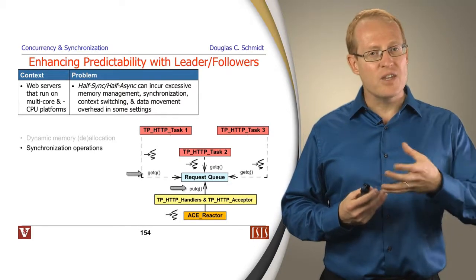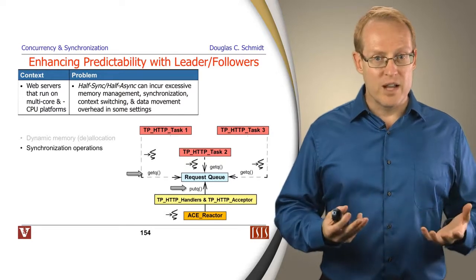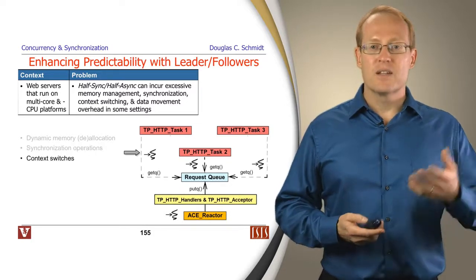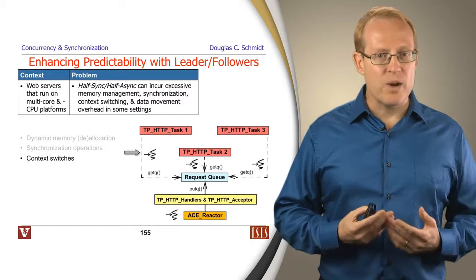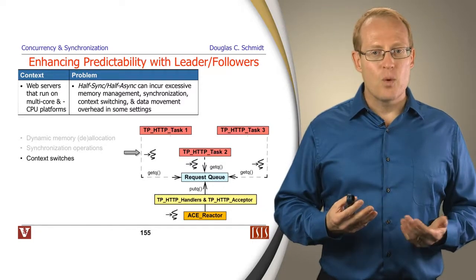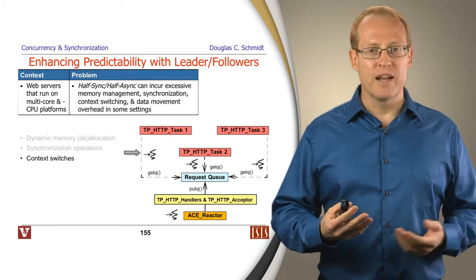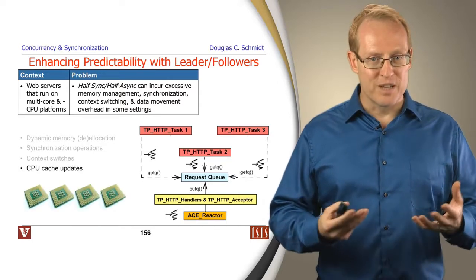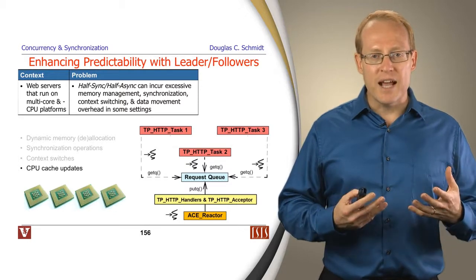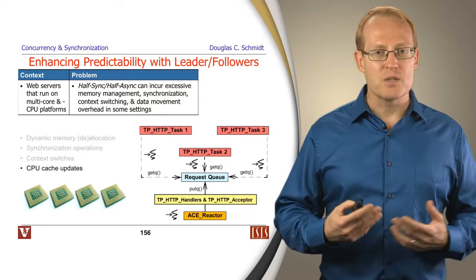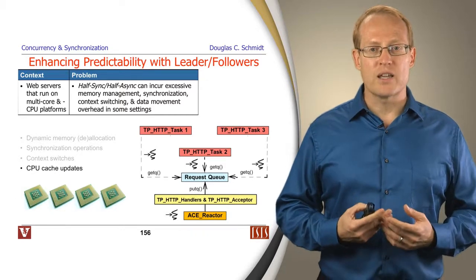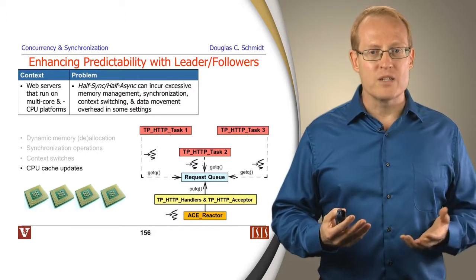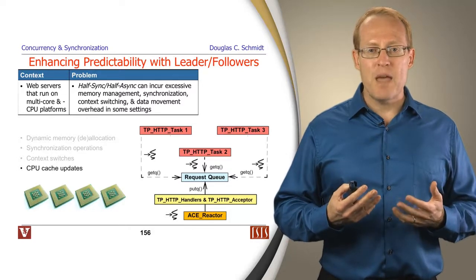Likewise, when we enqueue and dequeue things onto our thread-safe synchronized request queue, we have to do synchronization operations — we have to grab a lock, and that will have some overhead. When we try to move things between threads, that will typically incur a context switch, which can take many low-level instruction operations and deals with caches and other low-level hardware overheads. Another issue has to do with the overhead of moving data, such as request messages, between caches, between cores, and between CPUs on a multi-CPU platform. That all starts to add up. So even though half-sync/half-async has many positive qualities, for certain types of requests it may be too much overhead.